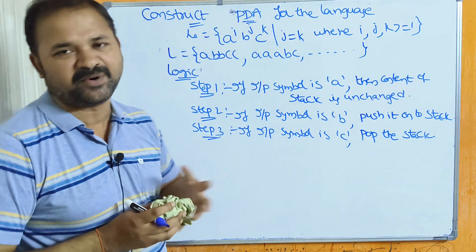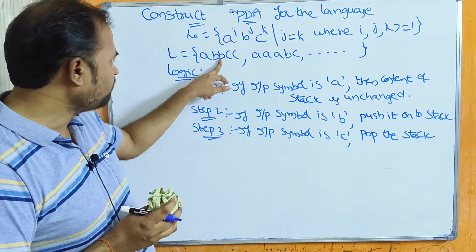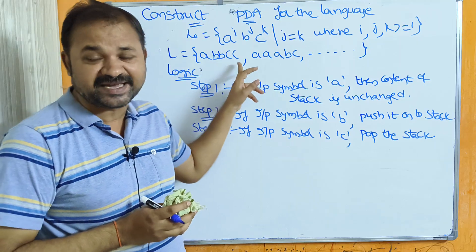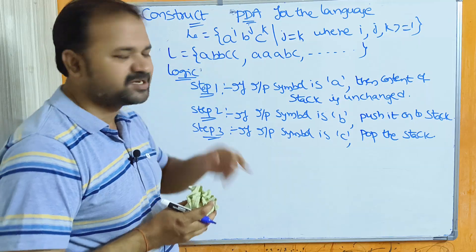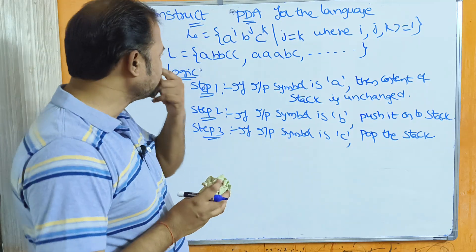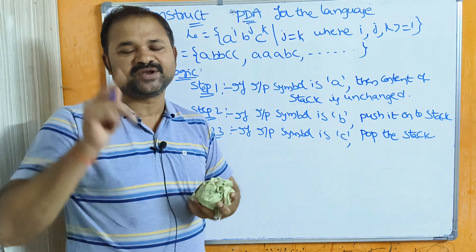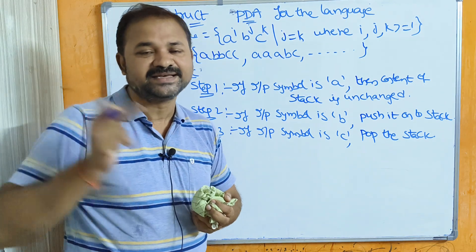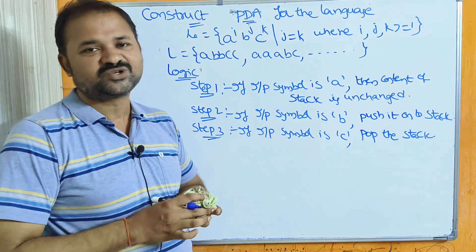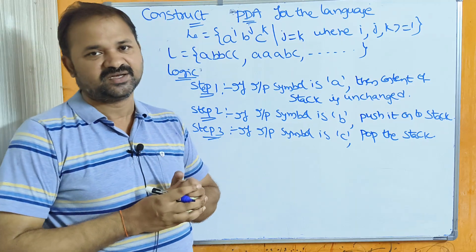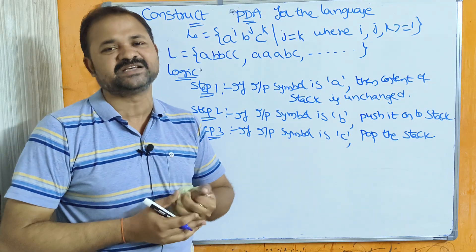If you take the language as a collection of strings: in the first string we have 2 b's and 2 c's, so the number of b's and c's are equal. Regarding a's, it is our choice — just 1 a is taken, so the first string is a, bb, cc. In the second string, we have 1 b and 1 c, so b's and c's are equal, and 3 a's are taken. Likewise, we can take infinitely many strings.